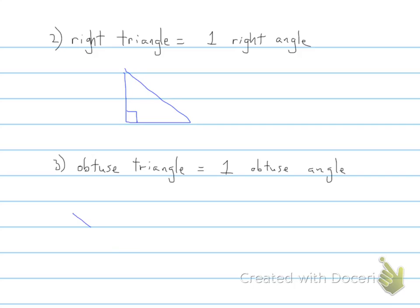So again, going back to our obtuse angles, greater than 90 degrees but less than 180 degrees. So it has one angle that is an obtuse angle. Now the second way to identify or classify triangles is going to be by using sides.